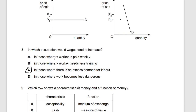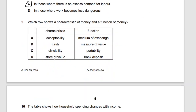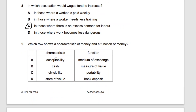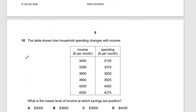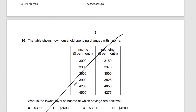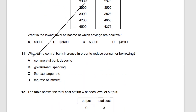Question nine: which row shows the characteristics and functions of money? Money must be acceptable and serve as a medium of exchange. The answer is noted but income topics from chapters one to three aren't fully covered here.